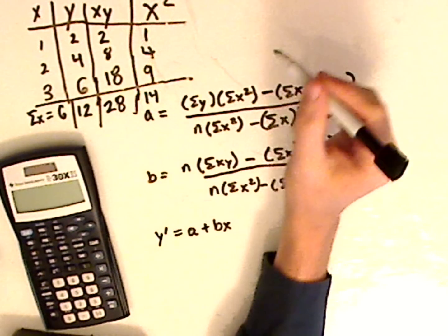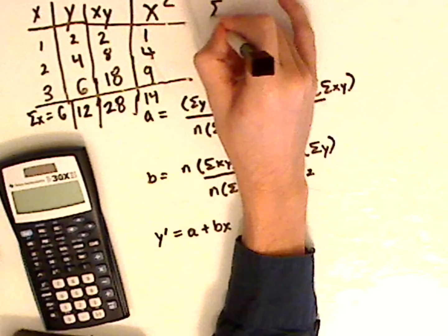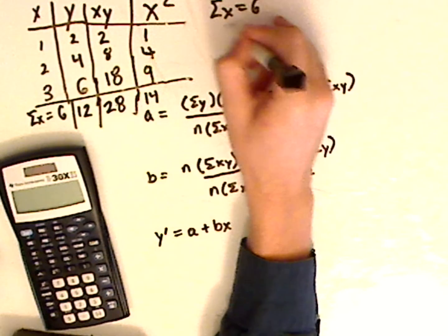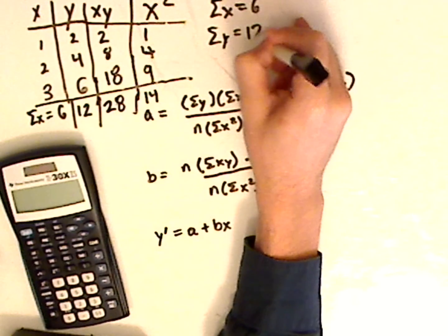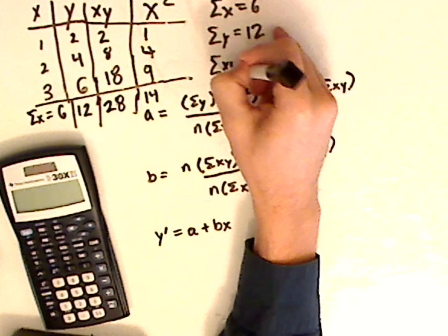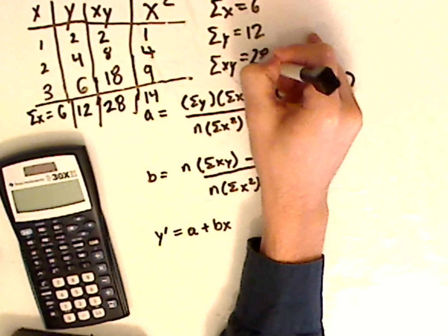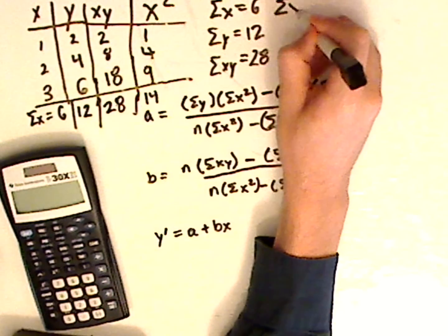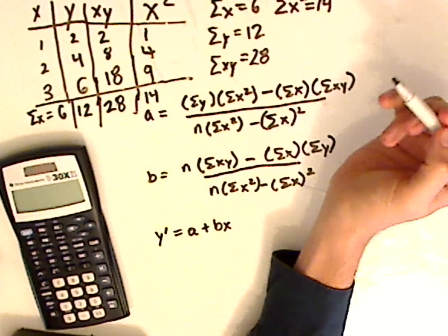Let me write those all on the side. The summation of x equals 6, the summation of y equals 12, the summation of xy equals 28, and the summation of x squared equals 14.